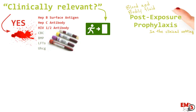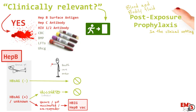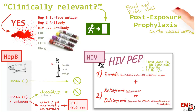For hepatitis B, if the source patient is positive or unknown, ask the healthcare worker if they're vaccinated. If they're not sure or they're a non-responder, go ahead and give them the hepatitis B immunoglobulin and the hep B vaccine. For HIV, remember to give the first dose in the ER if it is a clinically relevant exposure — try to do that within 90 minutes of exposure — then send them home with a five-day prescription of Truvada plus Bictegravir or Dolutegravir. Make sure everybody follows up in 48 hours with infectious disease or employee health.